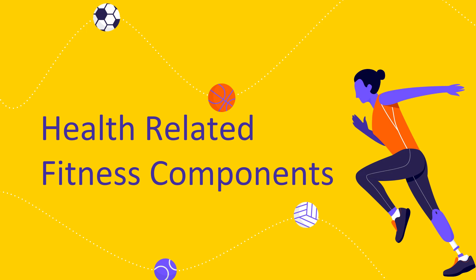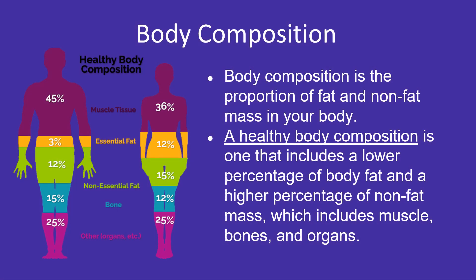Let us talk about the different health-related fitness components. First is body composition — the proportion of fat and non-fat mass in your body. A healthy body composition includes a lower percentage of body fat and a higher percentage of non-fat mass, which includes muscle, bones, and organs. For your first task, you will get your BMI to know your body fat percentage and categorize yourself as underweight, normal, overweight, or obese.